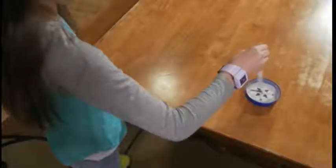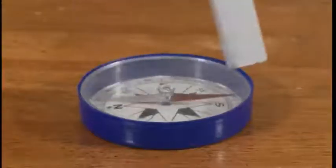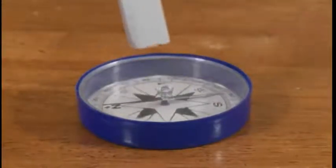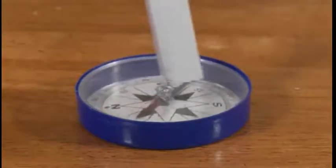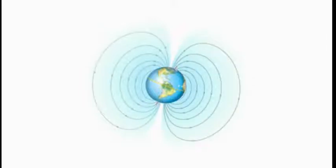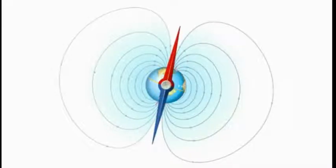There are many uses for magnets. Magnets are what make a compass work. The red pointer in a compass is a very lightweight magnet. Earth has a magnetic field. It behaves like there is a giant magnet with one end near the north pole and one end near the south pole. The red pointer of the compass will always point toward the north because the magnet is attracted to that part of Earth's magnetic field.